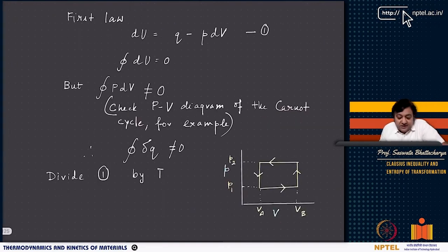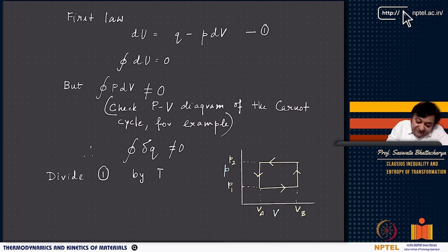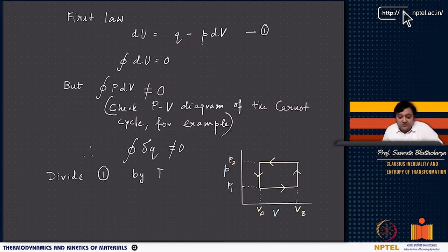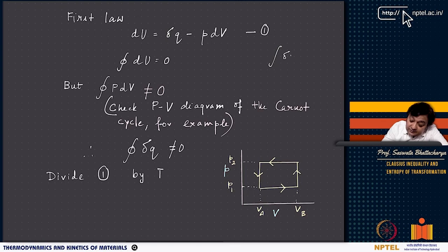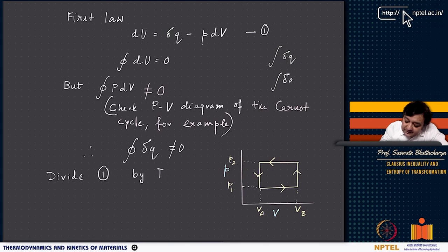Starting from the first law — conservation of energy — dU equals delta Q minus P dV. Delta Q is a path function, but delta Q by T is a state function. The integral of delta Q depends on the path, whereas the integral of delta Q by T depends only on the initial and final states — it is path independent.